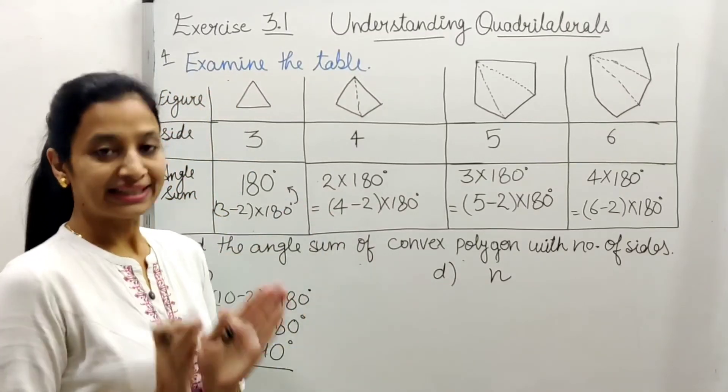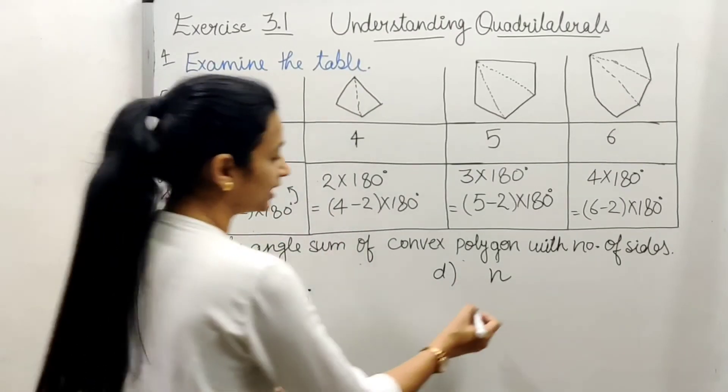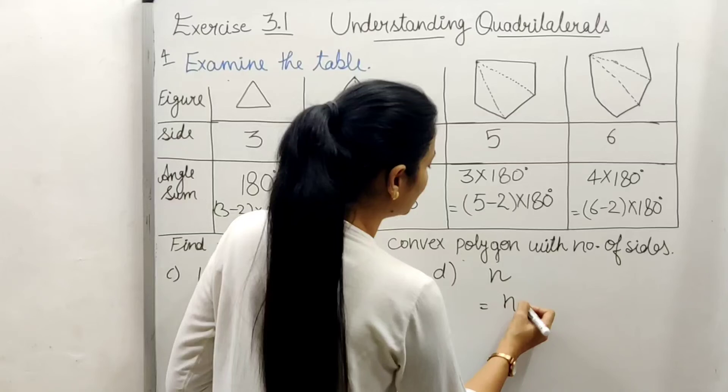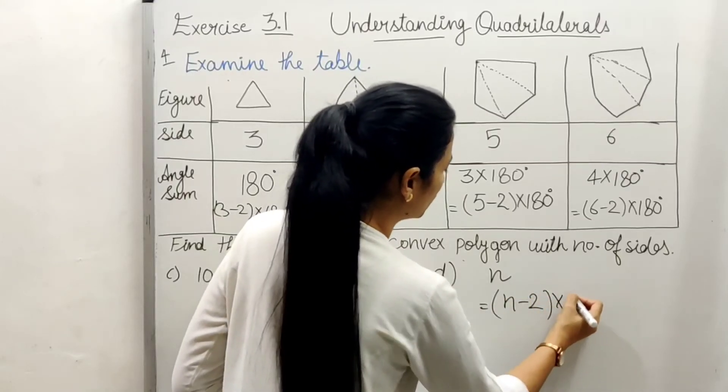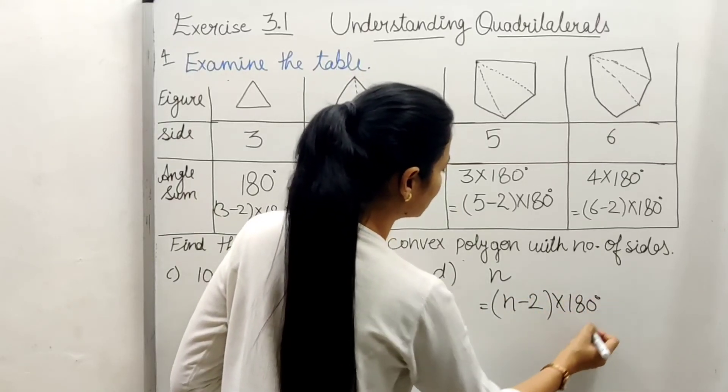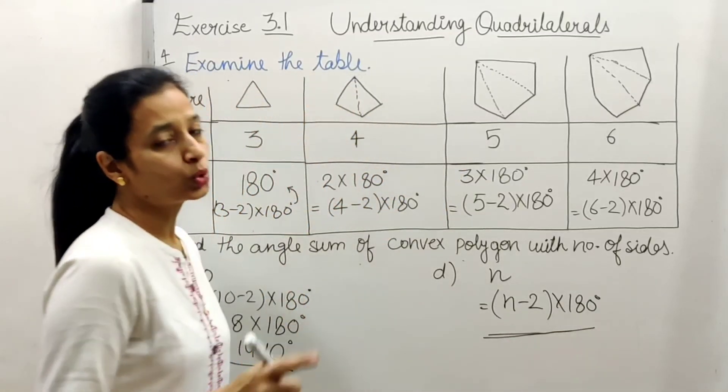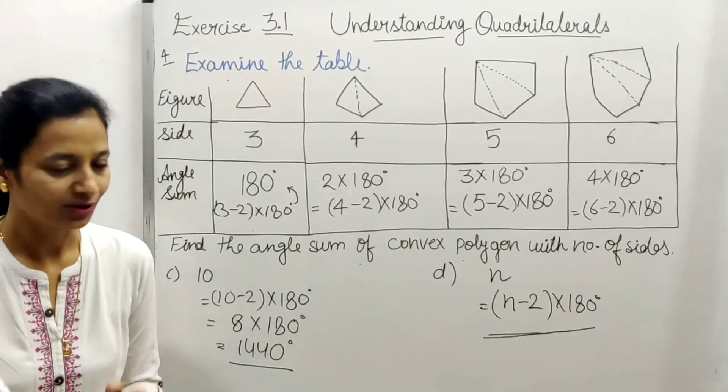n, polygon ki kitne sides hai? n sides. So dekho, yaha par kya ho jayega? n minus 2 into 180 degree. n minus 2 into 180, ok? Right?